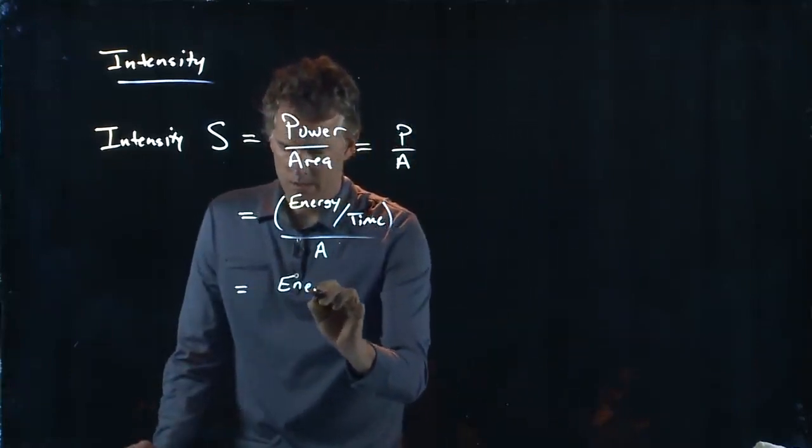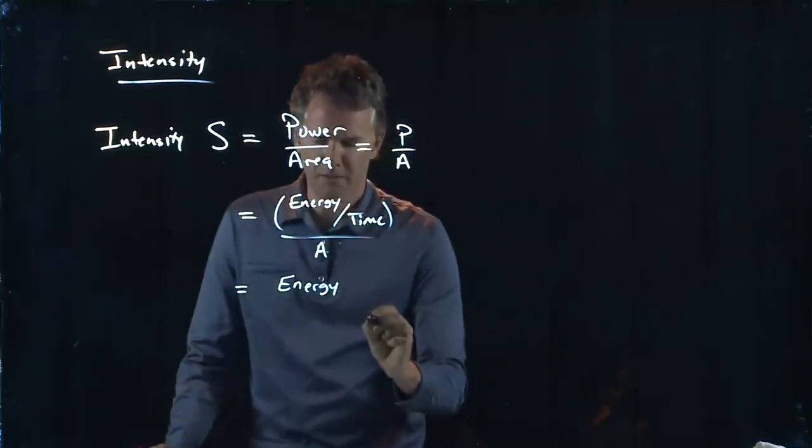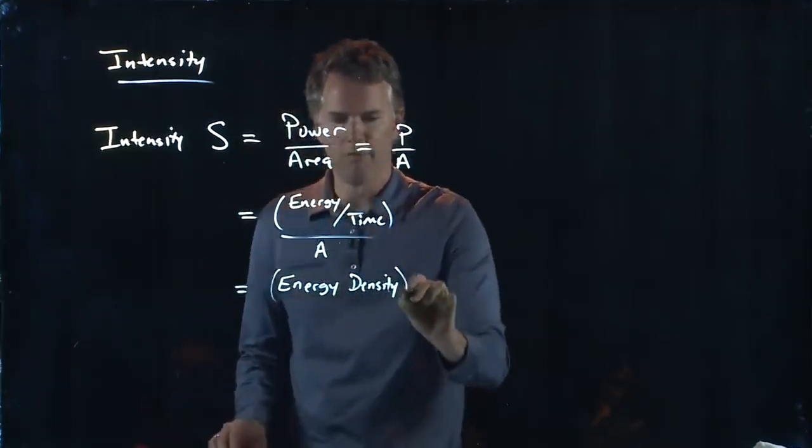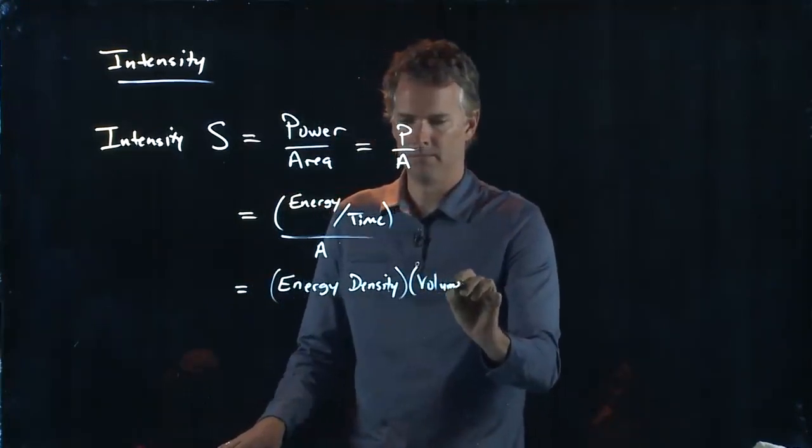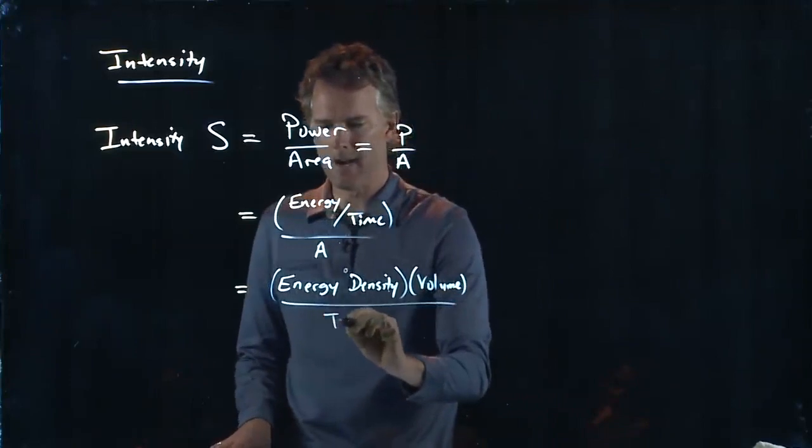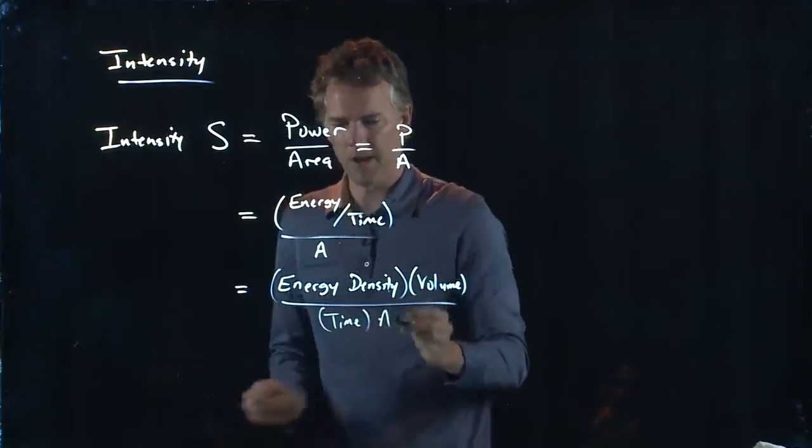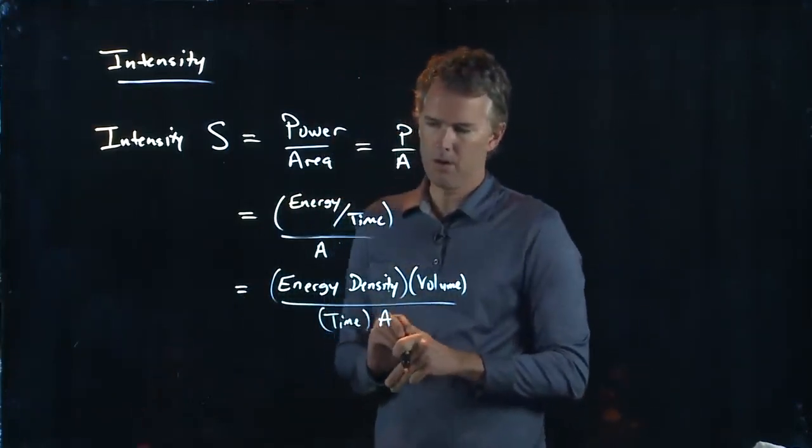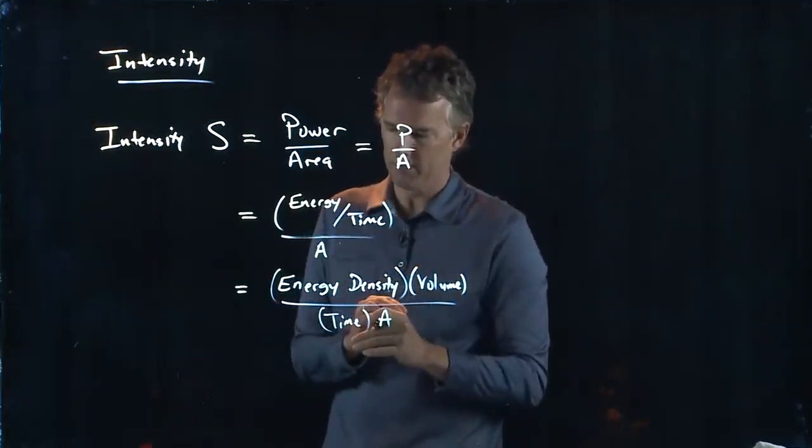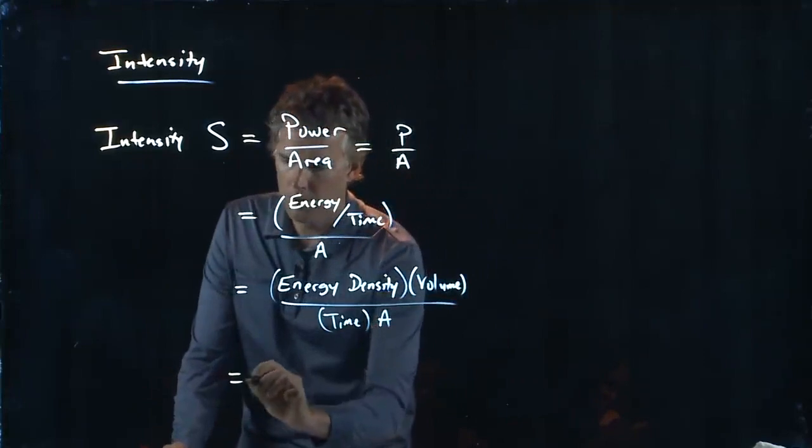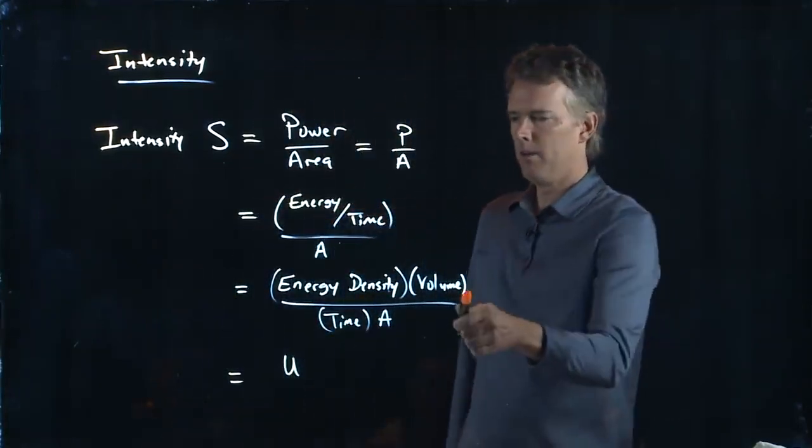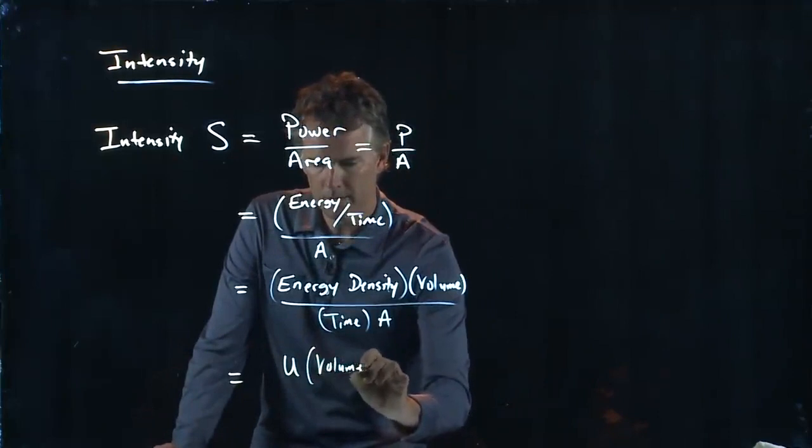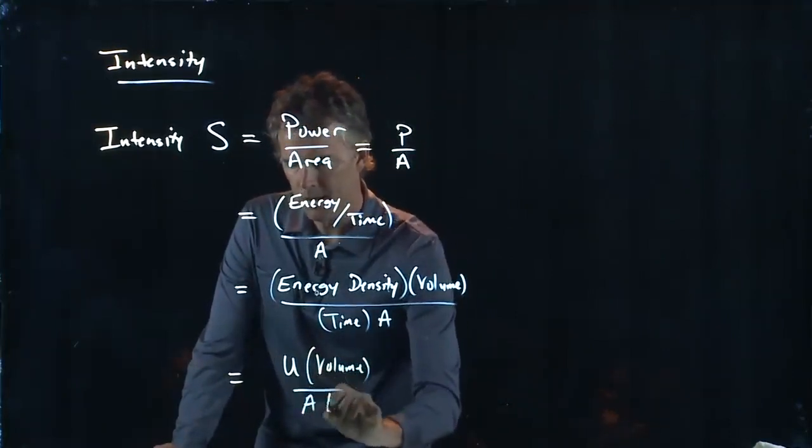And we're going to divide that by area A. Energy per time is the same as energy density times volume divided by time times area A. And we know what some of these things are. We know what energy density is. Energy density was our good old U. What about volume? Volume we're not really sure yet, so we'll leave it right there. Time is just T.